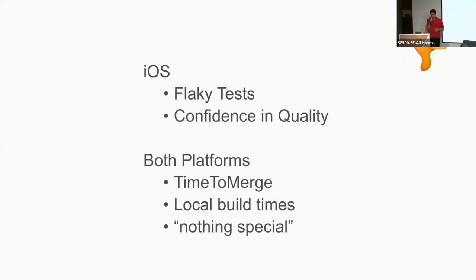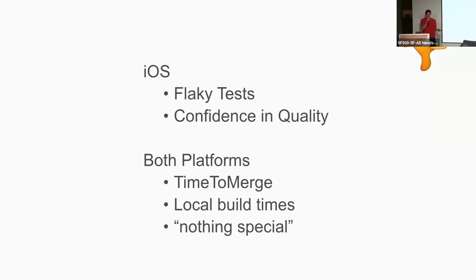Things that are not going so well: on iOS we are struggling with flaky tests and confidence and quality. We have a project this quarter to tackle that. On both platforms we need to revisit time to mergeable — it regressed on Android. Local build times: this is one of those things where unless you want to switch to a new build system — which every ex-Googler wants to do, switch to Bazel — it's hard to make progress. You can only optimize so much with what Android and Apple give you. And then there's this 'nothing special' comment — to achieve our vision, we do need to go above and beyond.